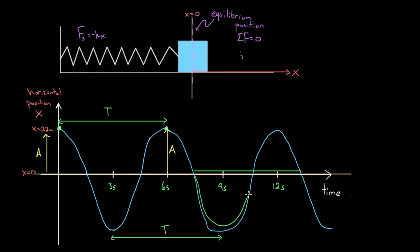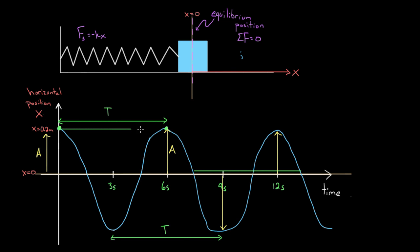So to recap: the amplitude of a simple harmonic oscillator is the maximum magnitude of displacement from the equilibrium position. You can measure it from either side and you'll get the same amount. And the period is the time it takes for an oscillator to complete one entire cycle, which you can find on a graph by measuring peak to peak, valley to valley, or from one equilibrium position — skipping an equilibrium position — to the next equivalent equilibrium position.